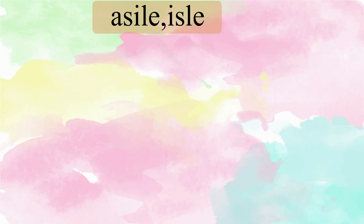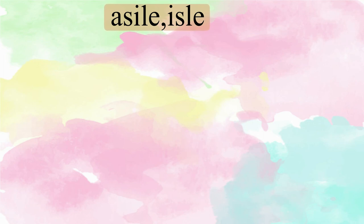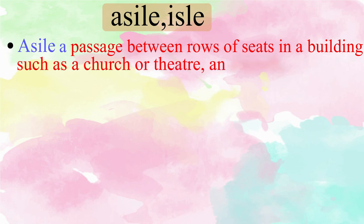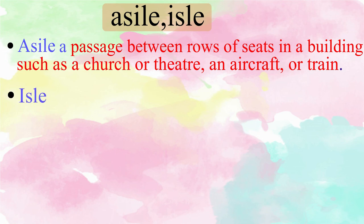The next set of words is Aisle and Isle. If you notice carefully, they are two different words with different spellings but they have the same sound. Aisle, spelled A-I-S-L-E, is a passage between rows of seats in a building such as a church or theatre, an aircraft or train. Whereas Isle, spelled I-S-L-E, is a small island.